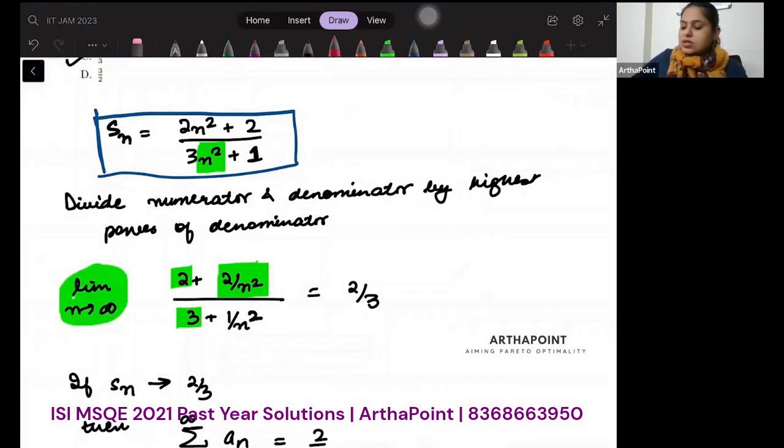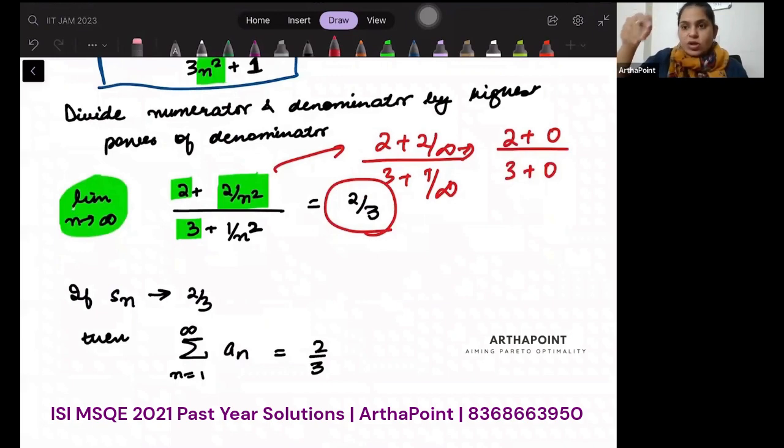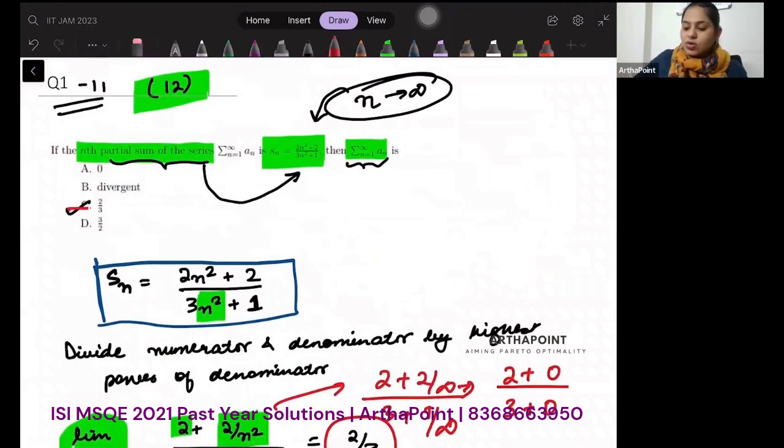This will simply be 2 plus 2 by infinity upon 3 plus 1 by infinity. Anything by infinity will be 0, so this will be 2 plus 0 upon 3 plus 0. So this will be 2 by 3. Because this is going towards 2 by 3, it means that the sum is going to converge to 2 by 3.